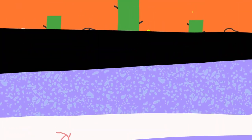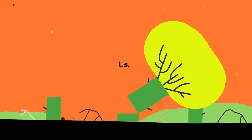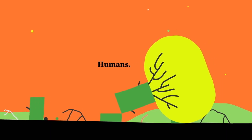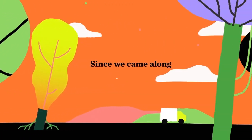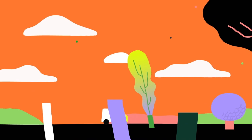Extinctions are rising faster than ever before. The difference? Us. Humans. Since we came along, species have been dropping out a hundred times faster than the natural rate.